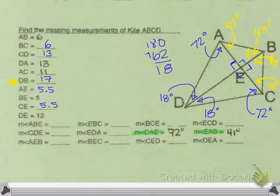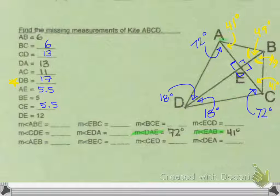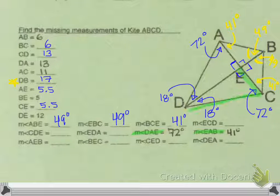Now let's go ahead and fill in my answers. Angle ABE right here, that's 49. EBC, also 49. BCE right here, that's 41. ECD right here, 72. CDE, that one's 18.